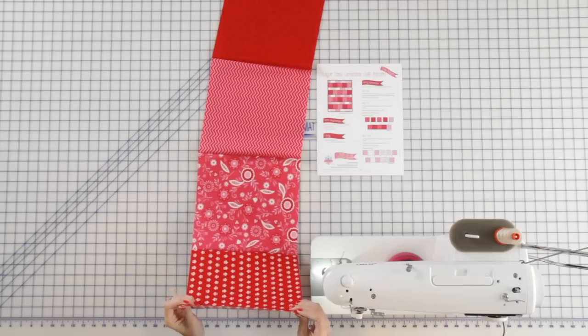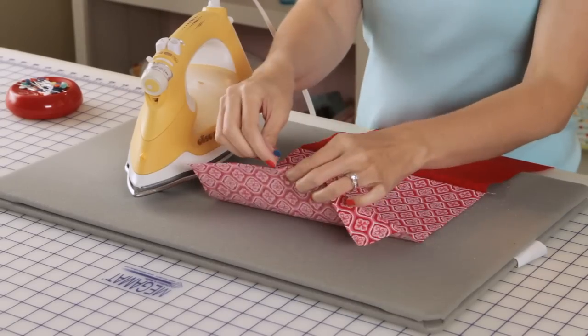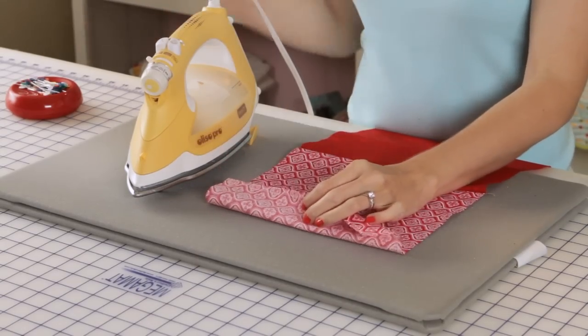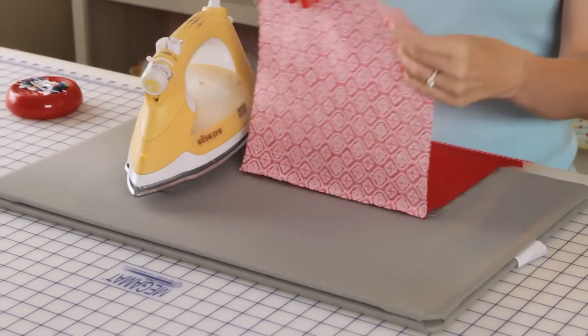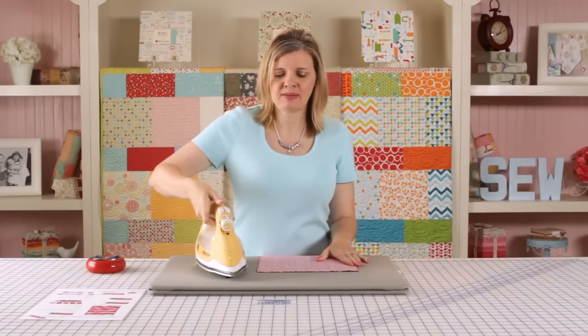Our next step is going to be to press our dark row. You can take your pin out since that was just a marking tool. We don't need that anymore. I'm going to lay your fabrics right sides together and first you're going to set your seams.